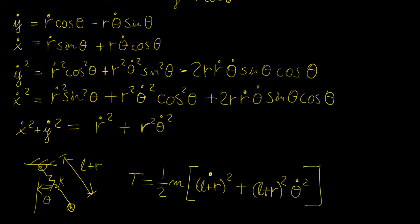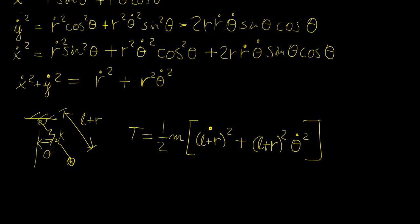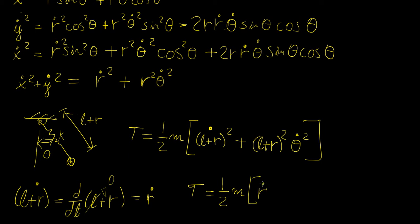Now what does this become? Well if you think about it, this expression right here is essentially the same as d over dt of l plus r. Now we know that l is a constant, so this is just going to become zero, and then in the end you're just going to have r dot, which means that your total expression is going to become this one, and then you have r dot squared plus l plus r squared theta dot squared.